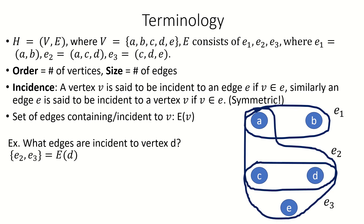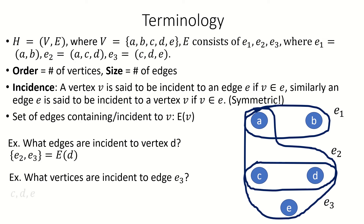Also, what vertices are incident to edge E sub 3? They are C, D, and E — the vertices that E sub 3 contains.